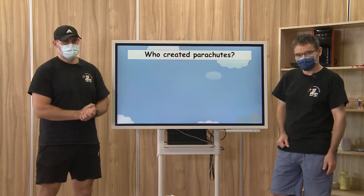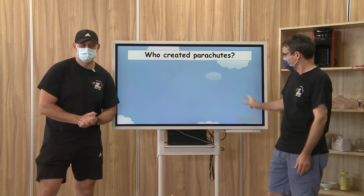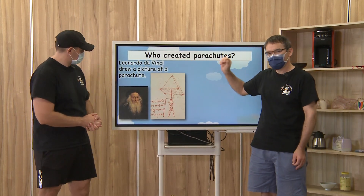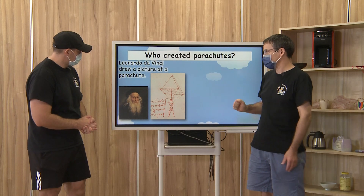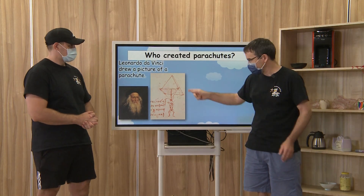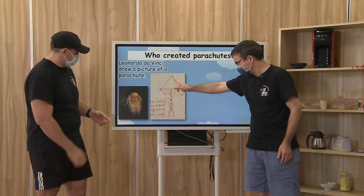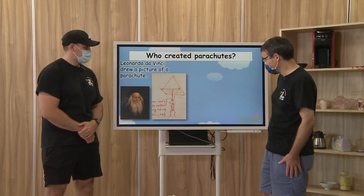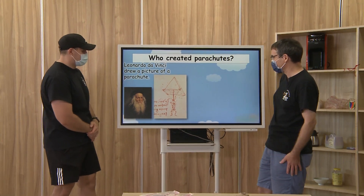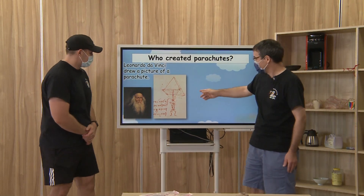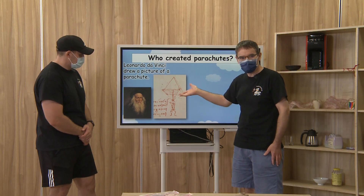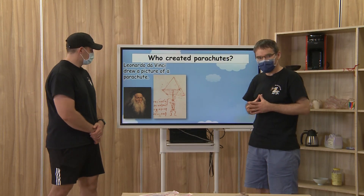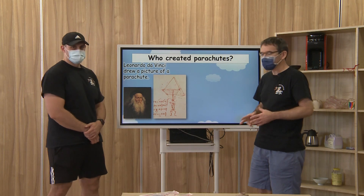So who created the parachute? Well, Leonardo da Vinci drew a picture of the parachute. He never made one, but he actually designed it. This guy? Yep, that's him. I've never actually seen him before — I just forgot what he looked like. But it's kind of a sketch. He drew the design of what the idea of the parachute was, but he actually never made one.